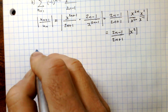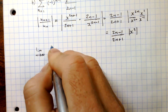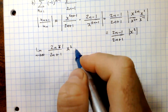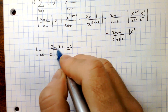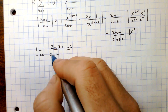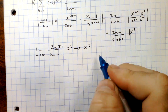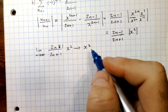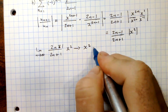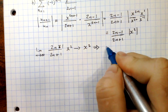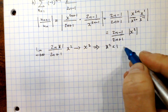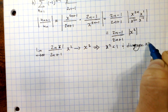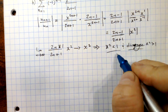Taking the limit as n→∞ of (2n−1)/(2n+1) times x²: dividing through by n gives a ratio of 2 over 2, which reduces to 1. So the limit equals x². By the ratio test, this series converges absolutely for x² < 1 and diverges for x² > 1.